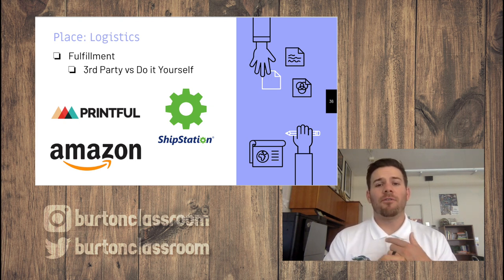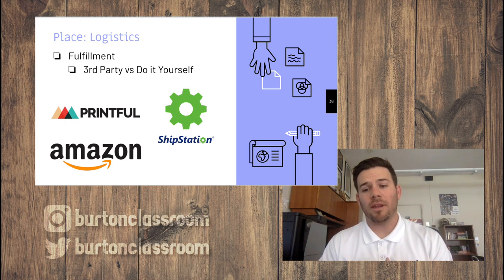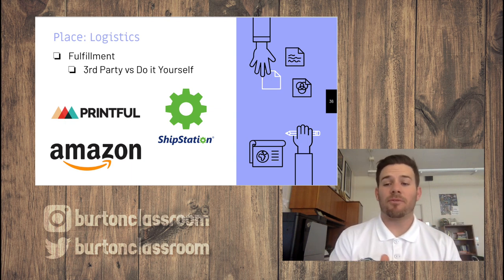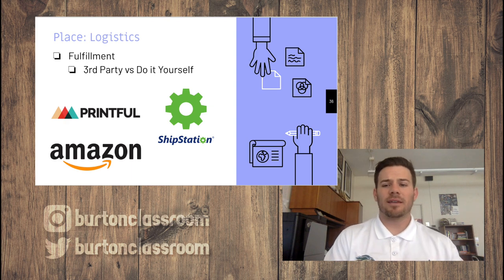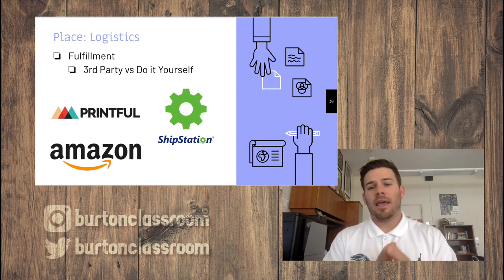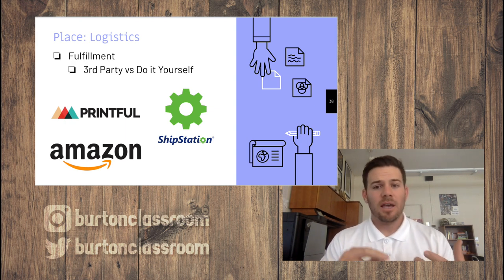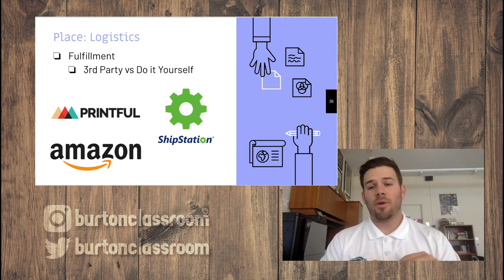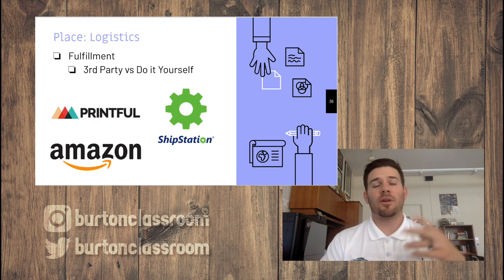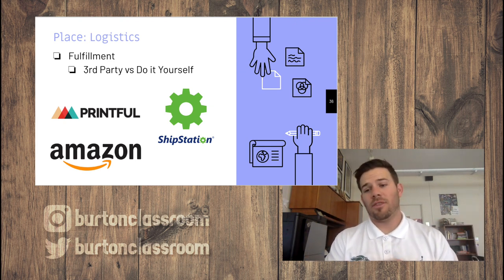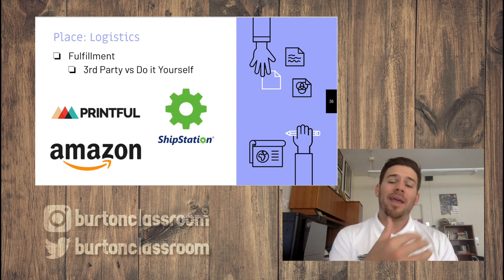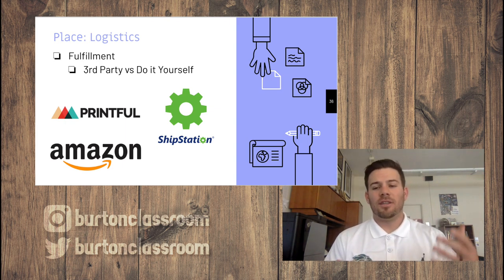Logistics: fulfillment — you can use a third party where all inventory is shipped to them, and when an order comes in they pick, pack, and ship it for you. Companies like Amazon fulfillment, ShipStation, and Printful handle this. Printful even prints a design on a shirt and ships it, sending you a check — all you do is create the design. It's very popular, but you're paying for a service you could do yourself — weigh the rewards against the cost.